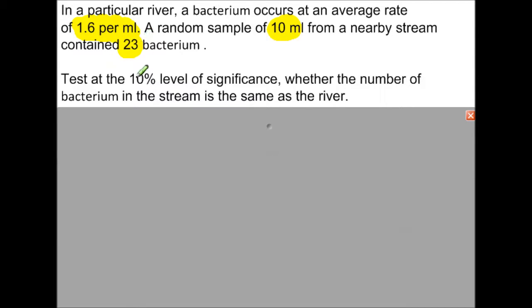We're going to use the 10% level of significance to do a hypothesis test and investigate whether the number of bacterium in the stream is the same as the river. This is a two-tail test. The number in the stream could be less than or more than the river, so we're looking for some kind of change.